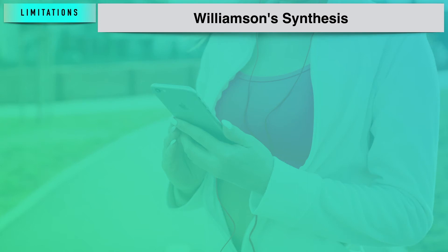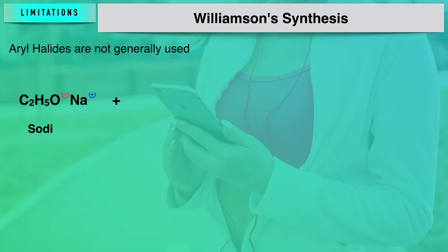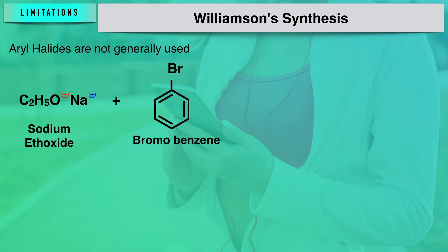Now for the limitations: when halogen is attached to a double bond or an aromatic ring — as in bromobenzene — the bromine atom is attached to the aromatic ring. In such cases, easy displacement with a nucleophilic reagent is not possible, so aryl halides are generally not used in Williamson synthesis. If bromobenzene is taken with sodium ethoxide and heated, no reaction proceeds — Williamson synthesis will not proceed.